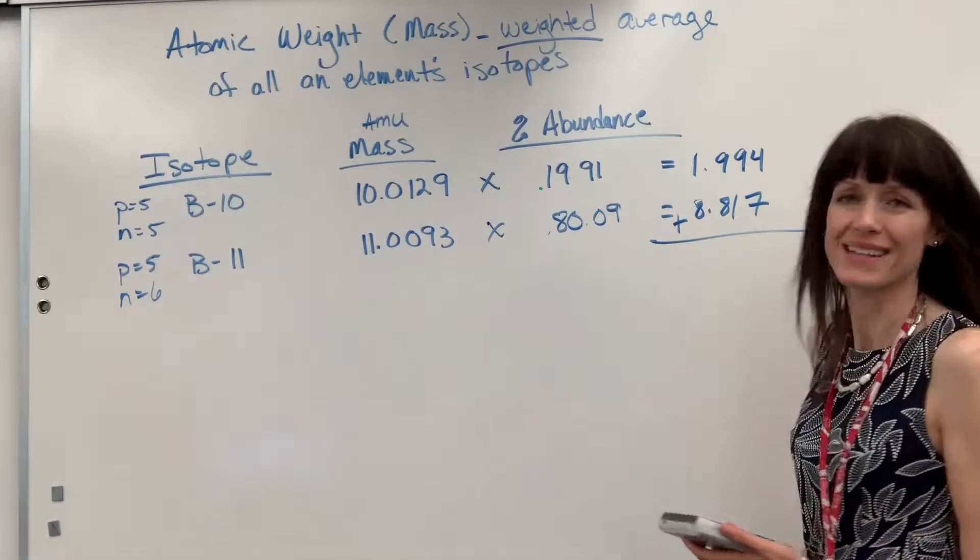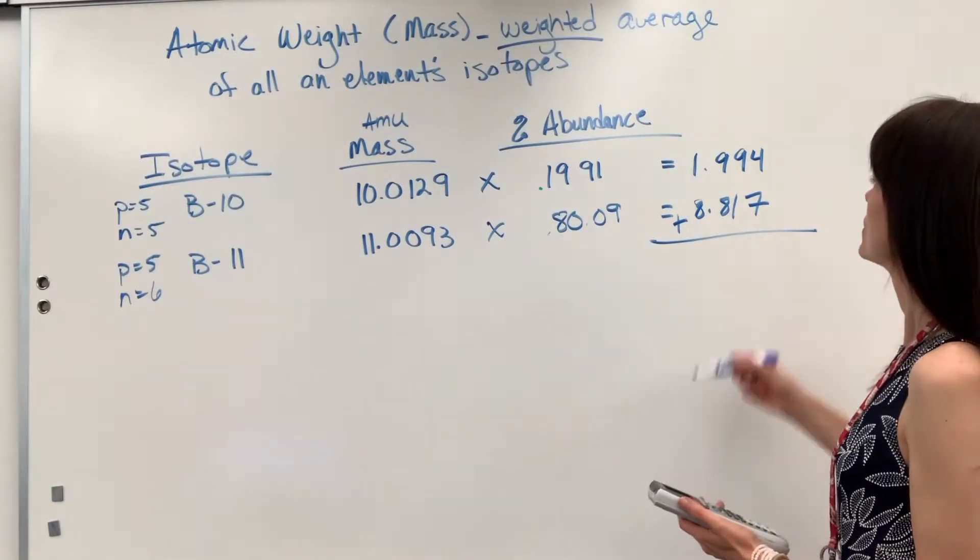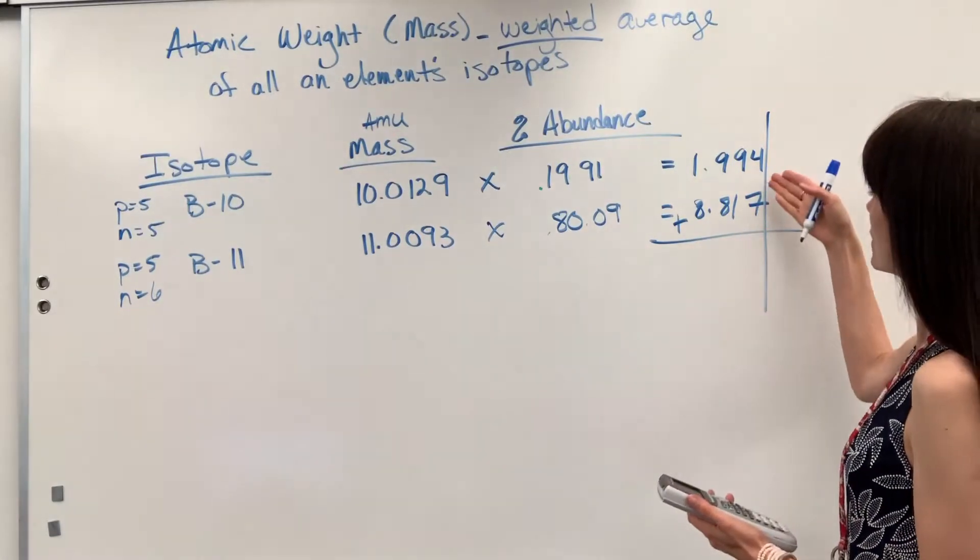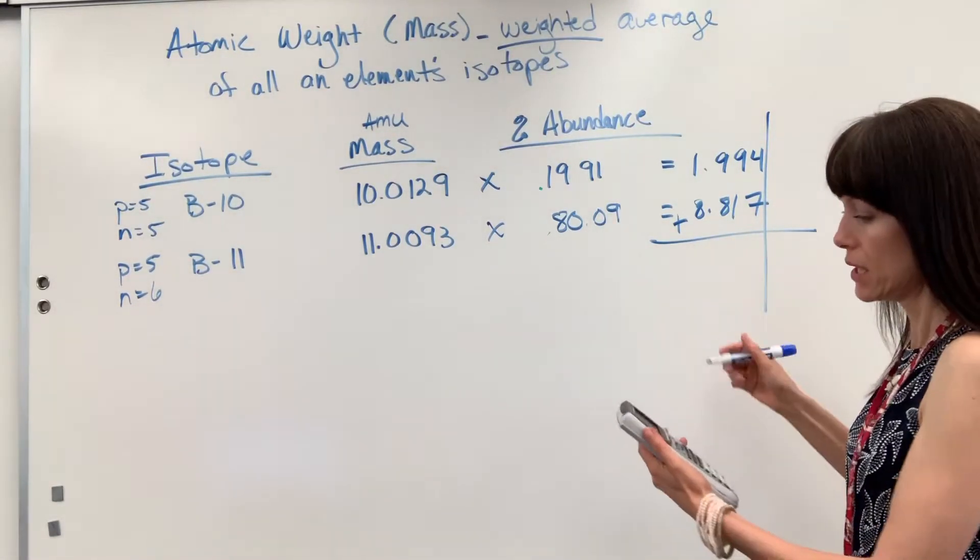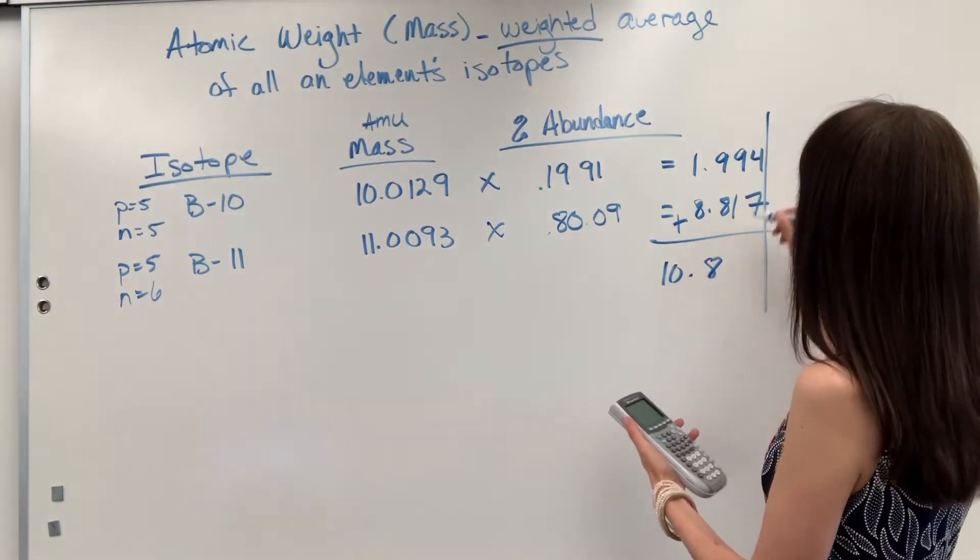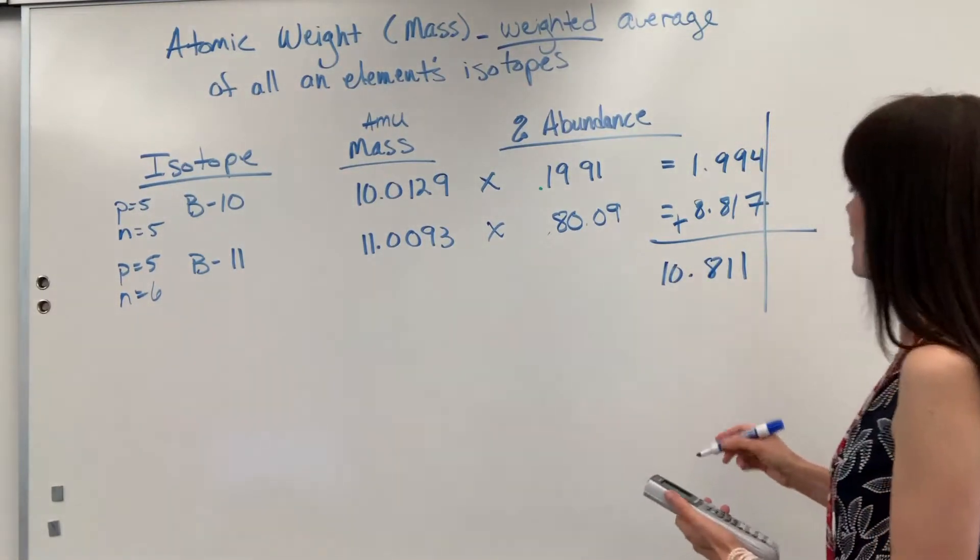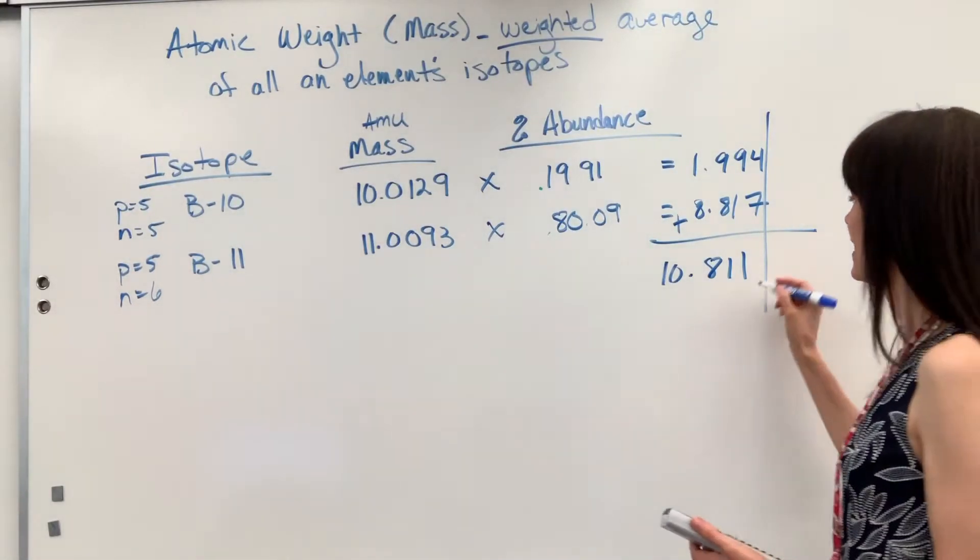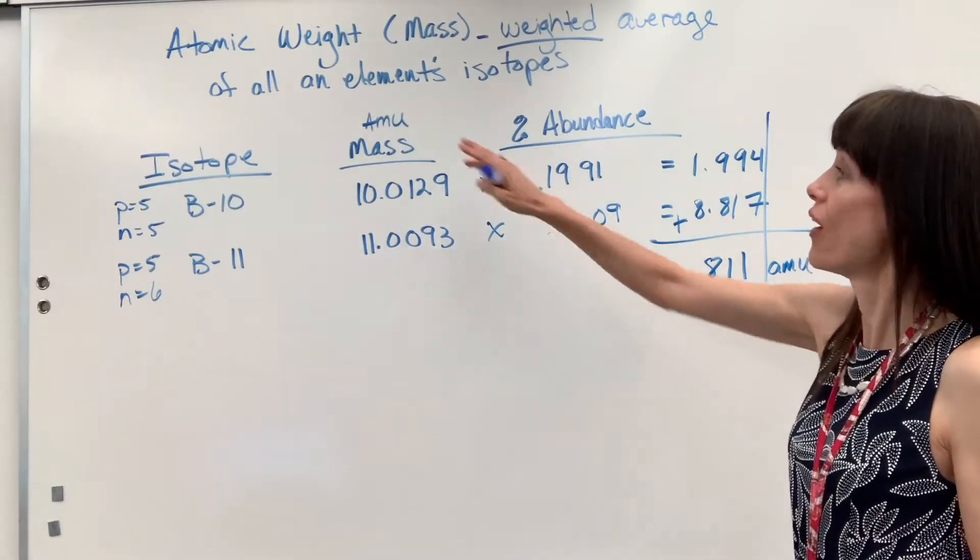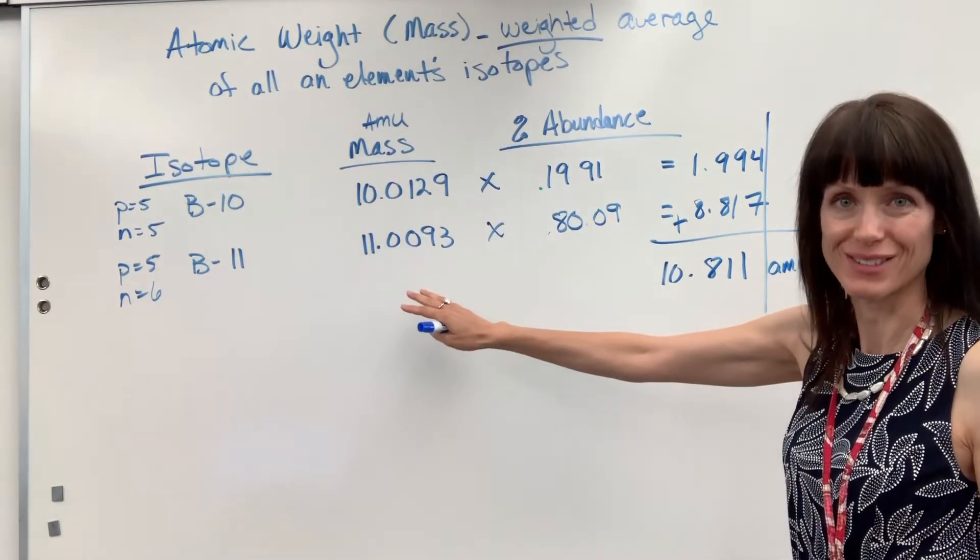Next, we're going to add these two together. Notice I'm at the thousandths place, and so that is going to be where we truncate. And we get 10.811, and the unit on this is AMU. That is the weighted average of those two isotopes.